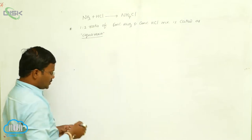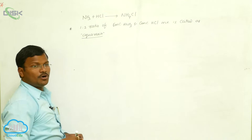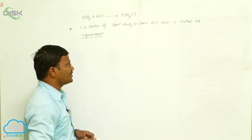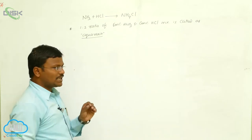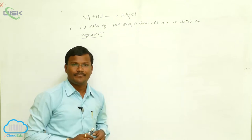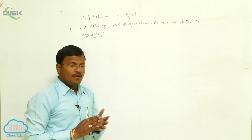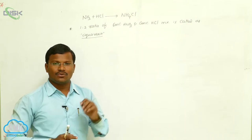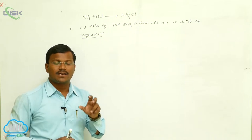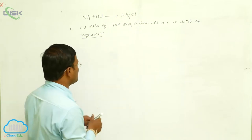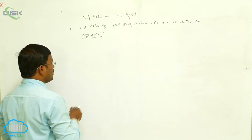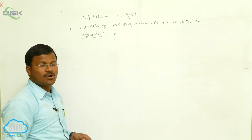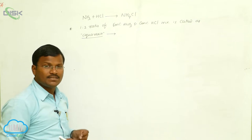This is an important expected two-marks question during the IPE examination: What is aqua regia? A 1:3 ratio of concentrated HNO3 and concentrated HCl mixture is called aqua regia. It acts as a strong oxidizing agent.